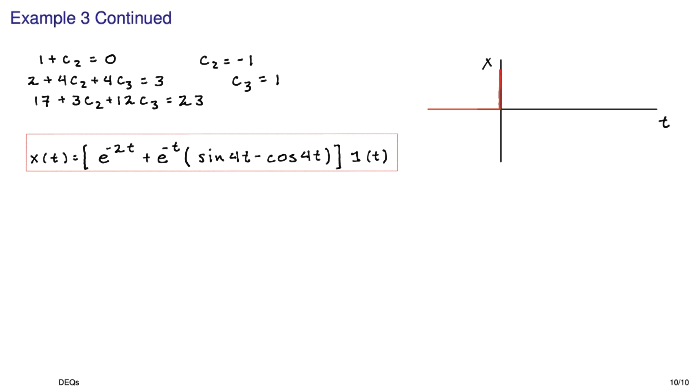So here's what it should look like. We have a decaying exponential, the e to the negative 2t term, and then we have this crazy decaying exponential sinusoid. And we would just add those two together according to the c1 and c2 and c3.